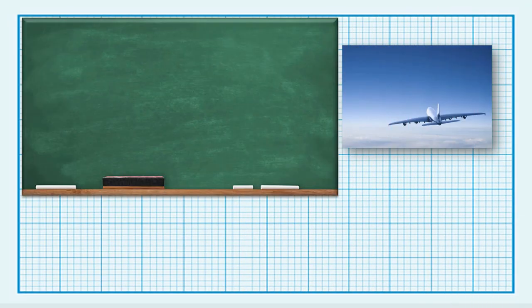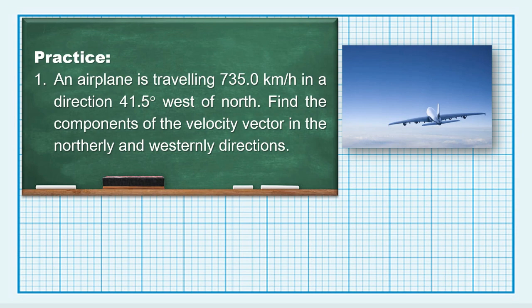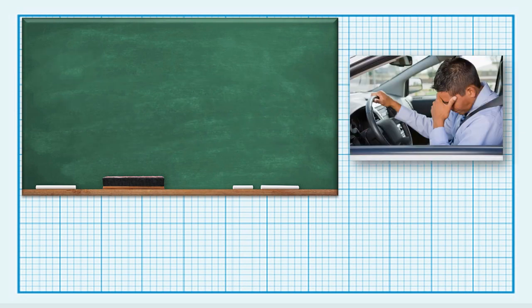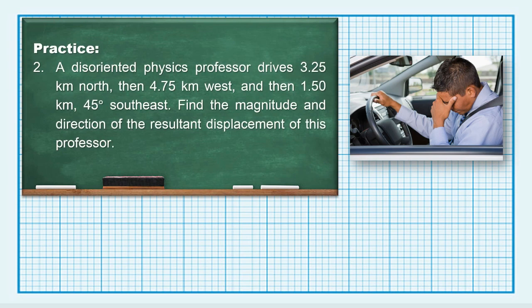Now it's your turn to practice some problems. First practice problem: an airplane is traveling 735.0 kilometers per hour in a direction of 41.5 degrees west of north. Find the components of the velocity vector in the northern and western directions. Second practice problem: a disoriented physics professor drives 3.25 kilometers north, then 4.75 kilometers west, and then 1.50 kilometers at 45 degrees southeast. Find the magnitude and direction of the resultant displacement of this professor.